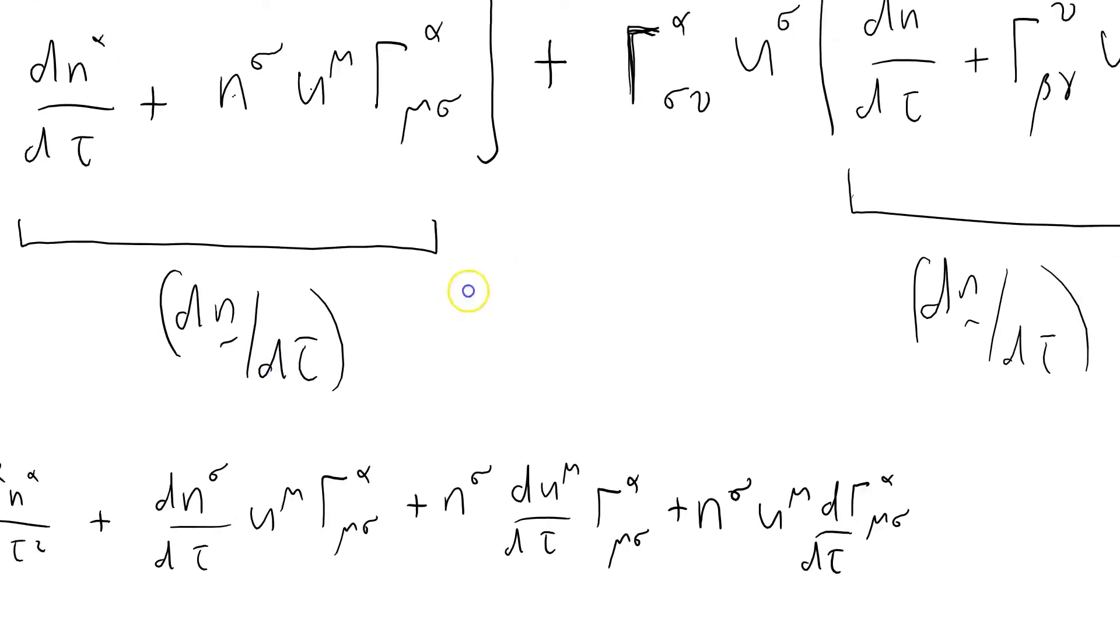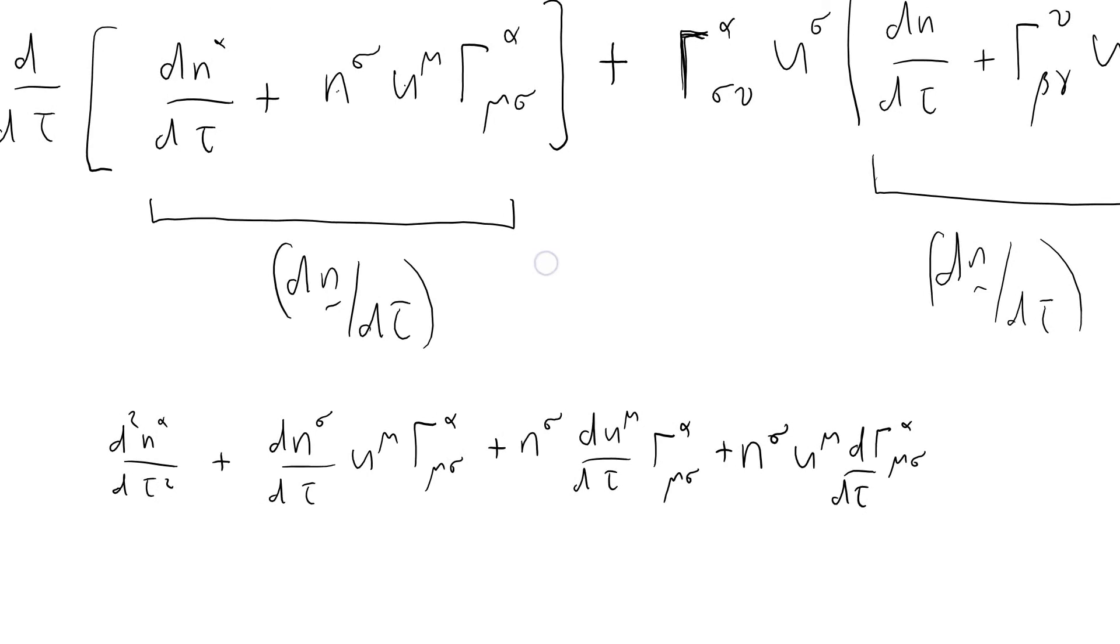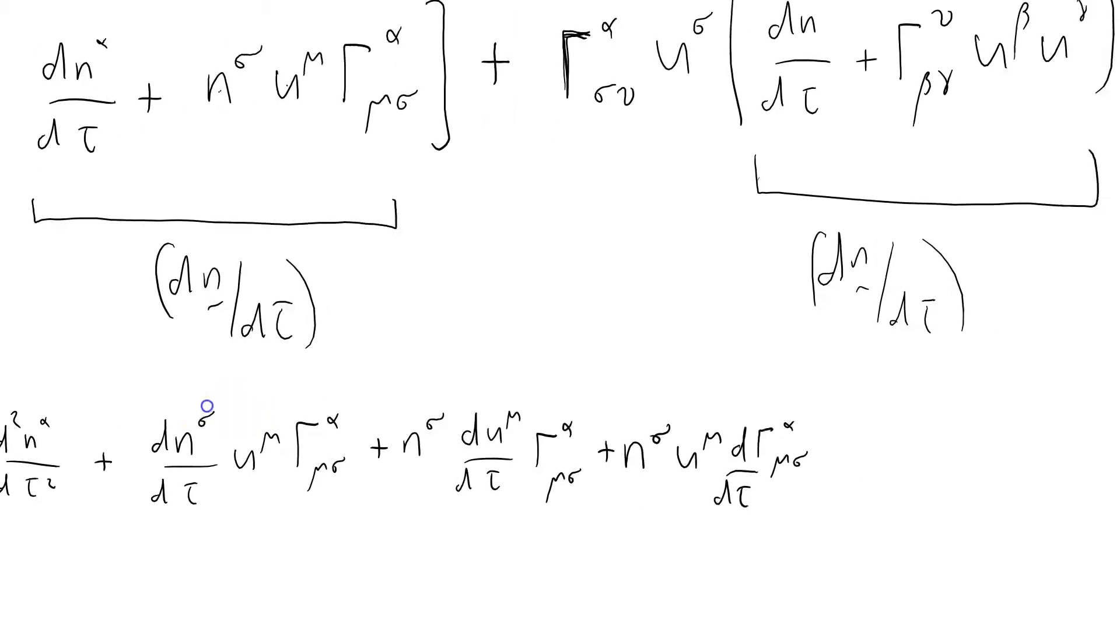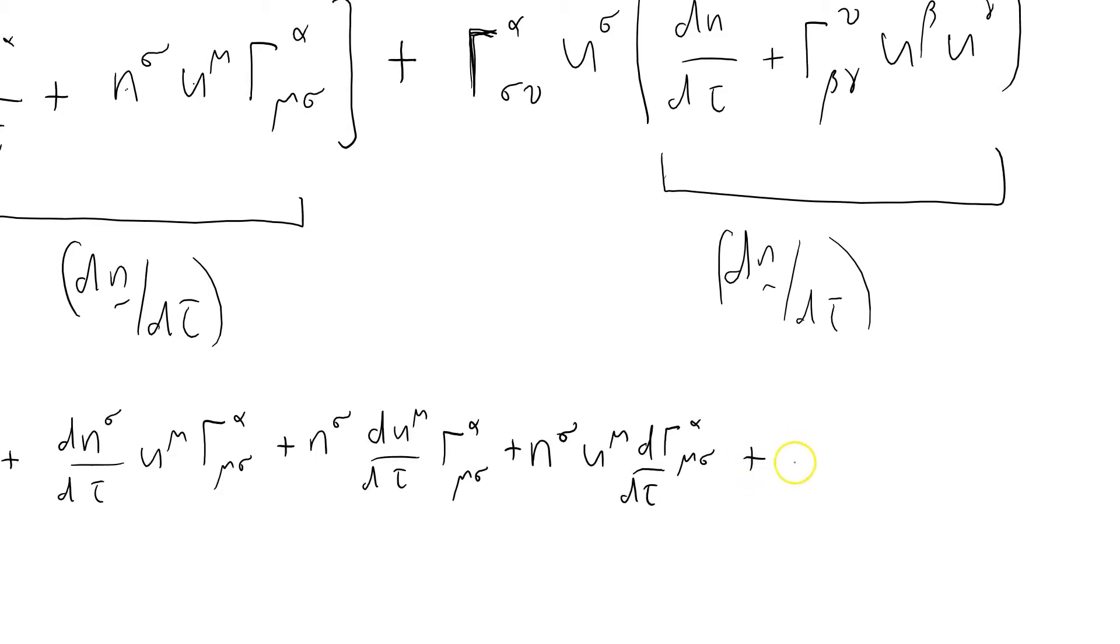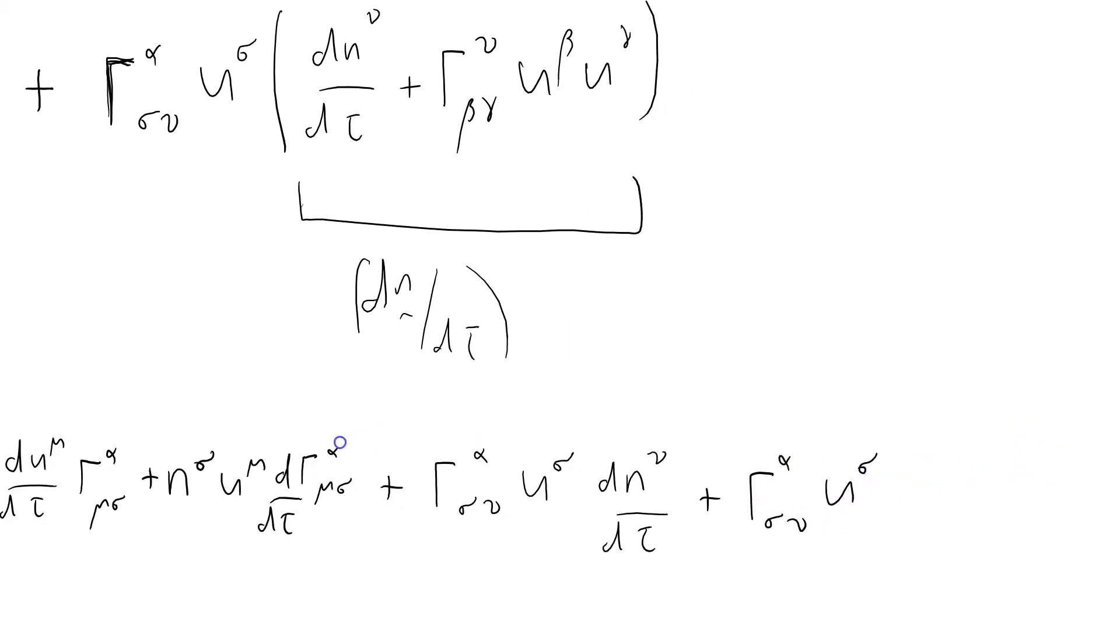Plus this other stuff here. Actually that's not as bad as it looks because there's no differentiation in there. I'll just write out the terms. Plus Christoffel alpha sigma mu u sigma and then this term here d n mu by d tau plus Christoffel alpha sigma mu u sigma Christoffel nu beta gamma u beta u gamma.